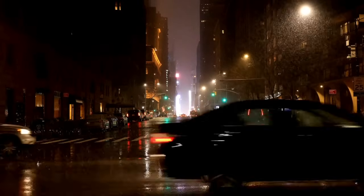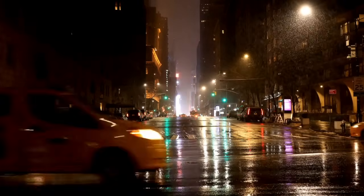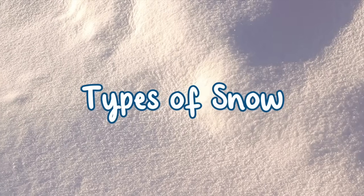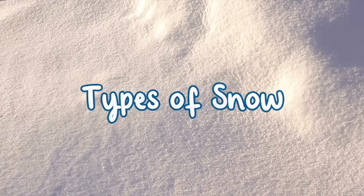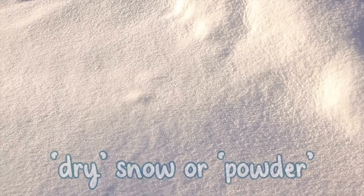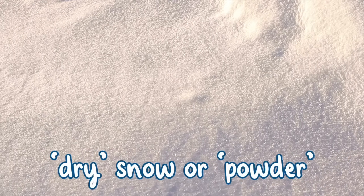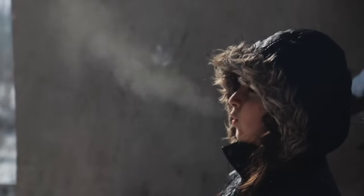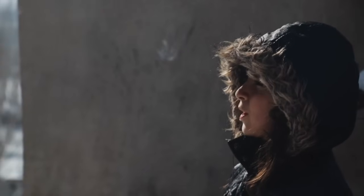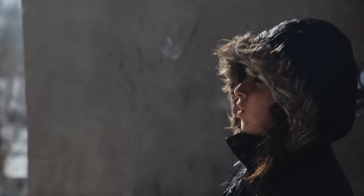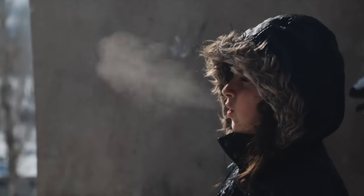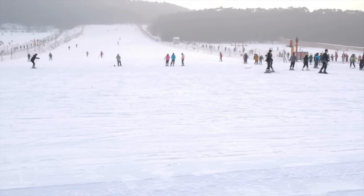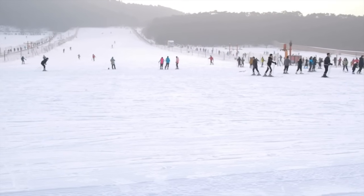Light and fluffy snow consists of small snowflakes and is known as dry snow or powder. This is formed when air temperatures are colder and there is less moisture in the air. Dry snow is ideal for winter snow sports but is more likely to drift in the wind.